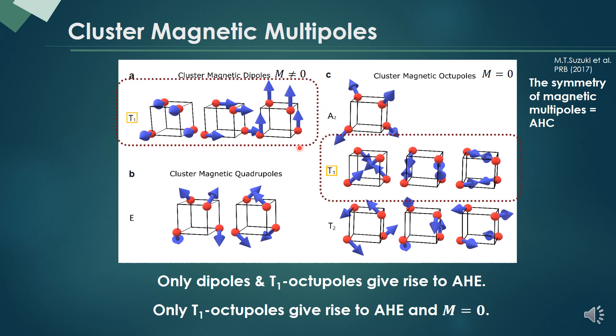On the other hand, the dipole, which is just a ferromagnetic order, and this new order called T1 octupole give rise to anomalous Hall effect because their symmetry is the same as anomalous Hall conductivity.